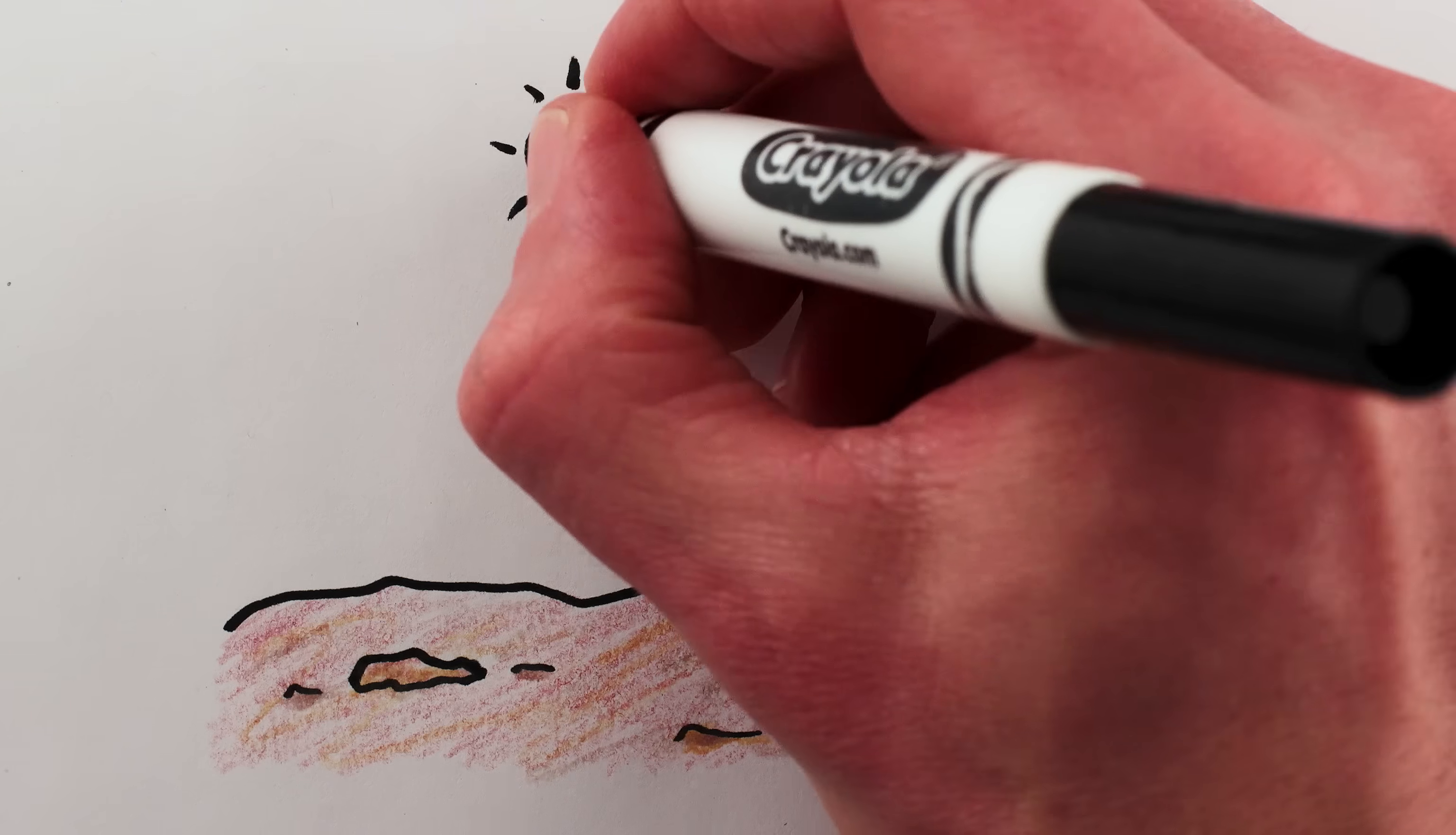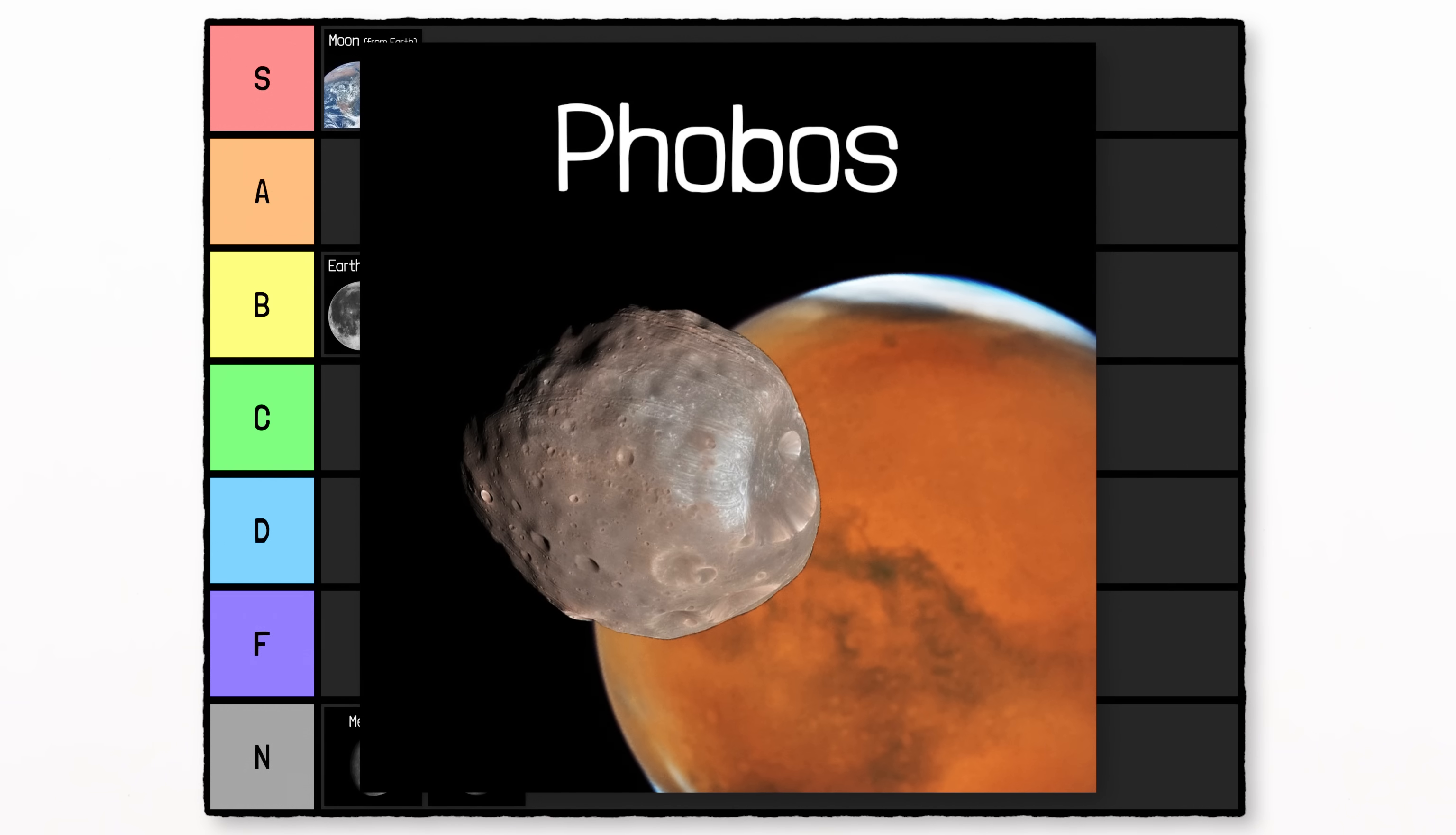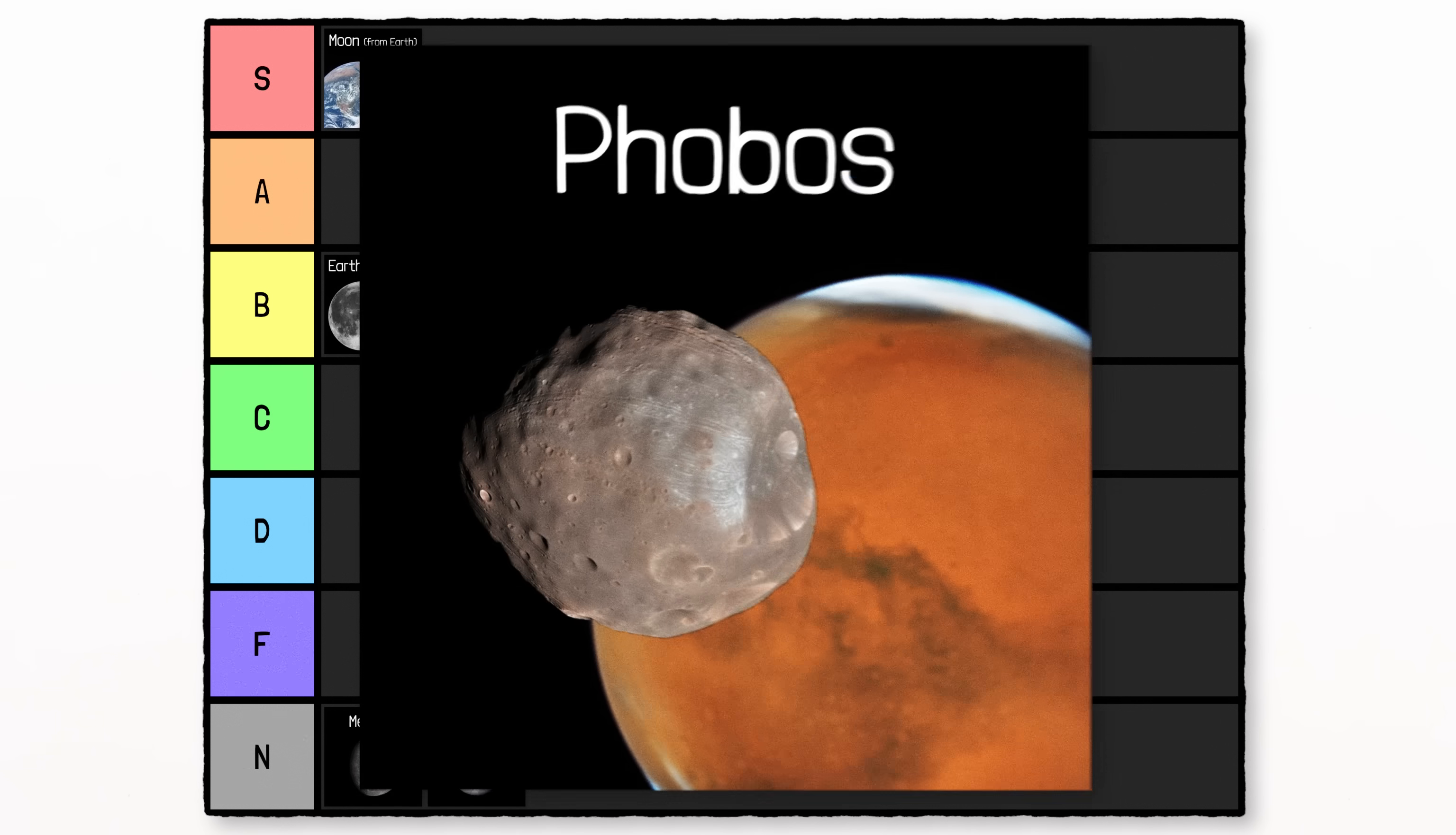Mars does have eclipses, but both of its moons are too small relative to the sun to cause a total eclipse. Phobos is close enough to Mars that it can cover as much as 30% of the sun during eclipses, and you get a lumpy ring. You'd need to wear solar glasses to see it, though. C-tier.